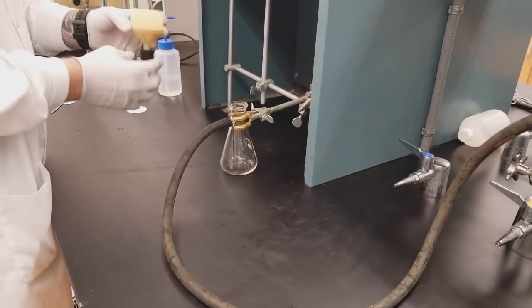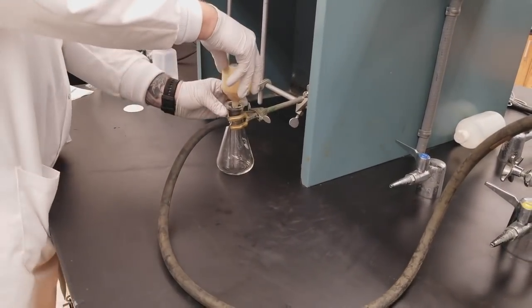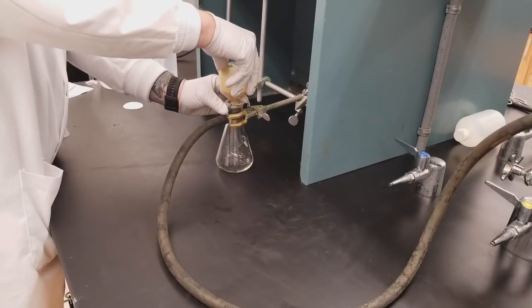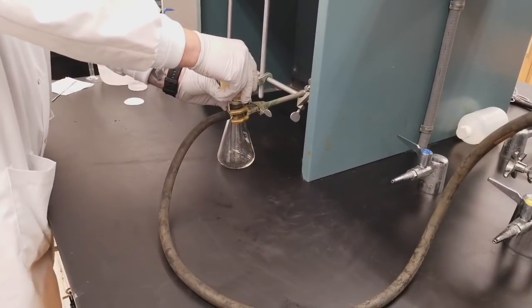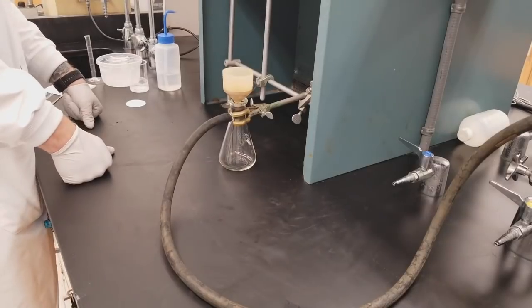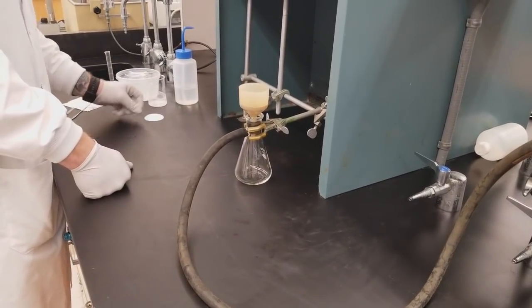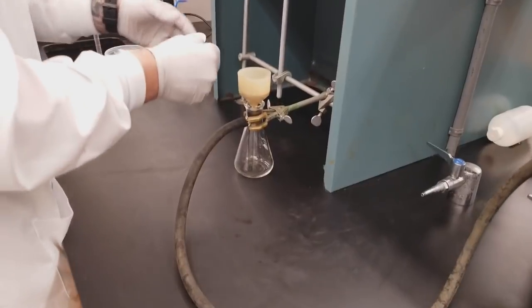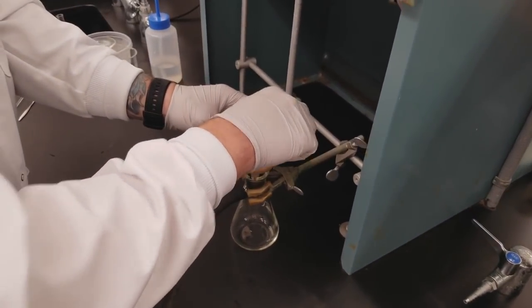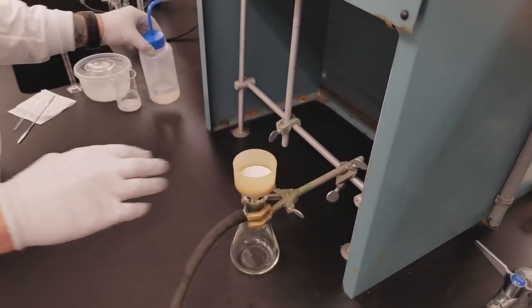So we'll take our Buchner funnel, make sure that we have that black vacuum adapter on there, put our Buchner funnel into our filtration flask and now we are ready to put our filter paper on top of the Buchner funnel. Just set that on top.